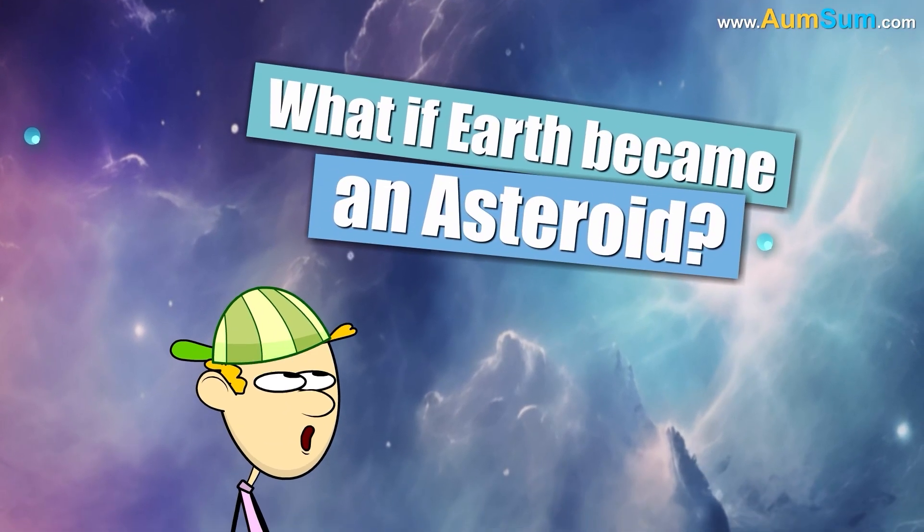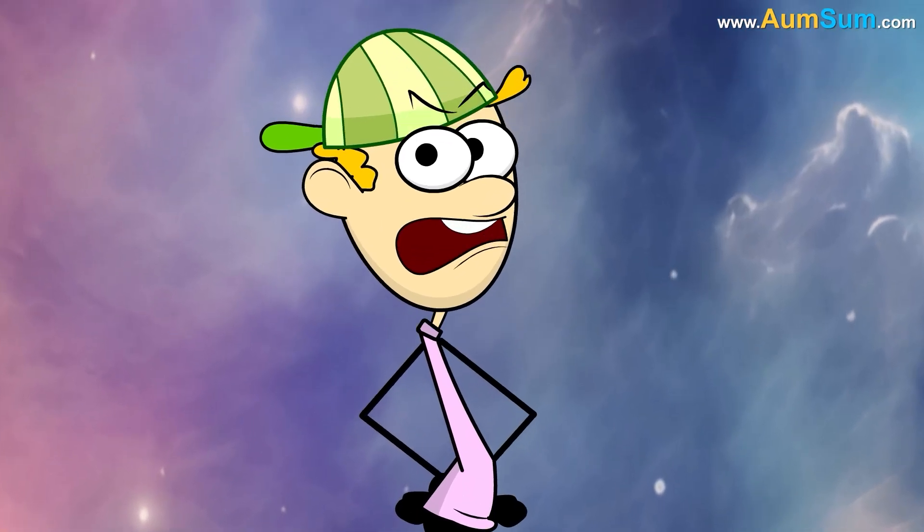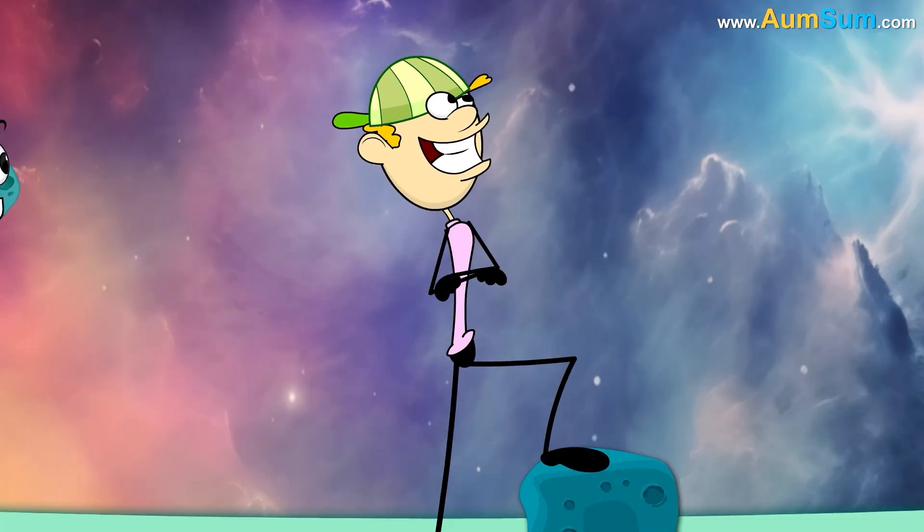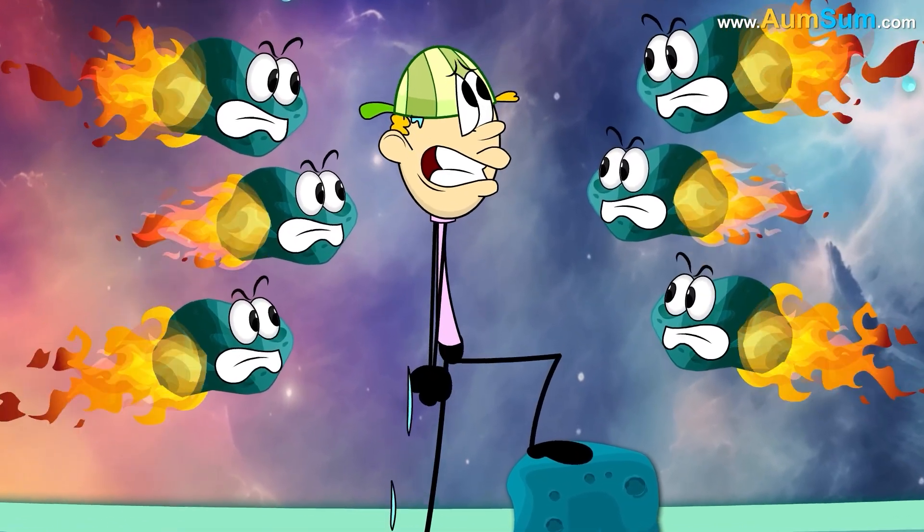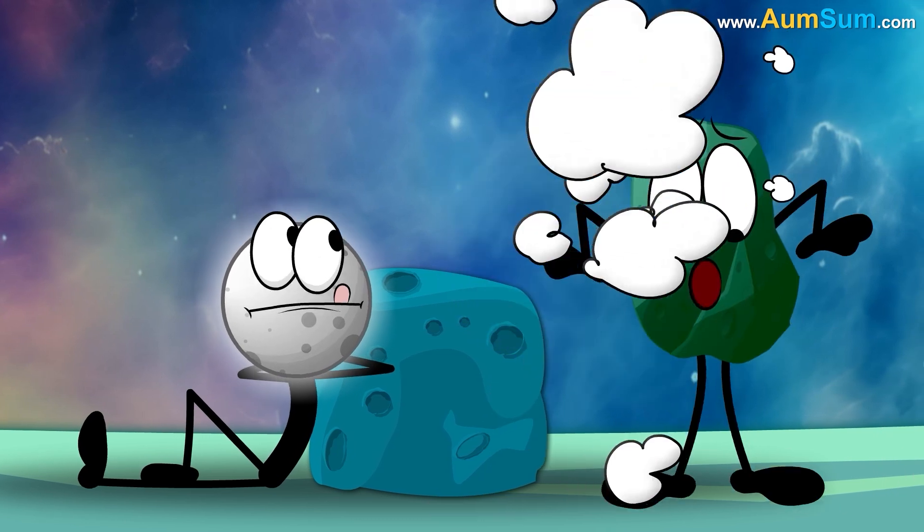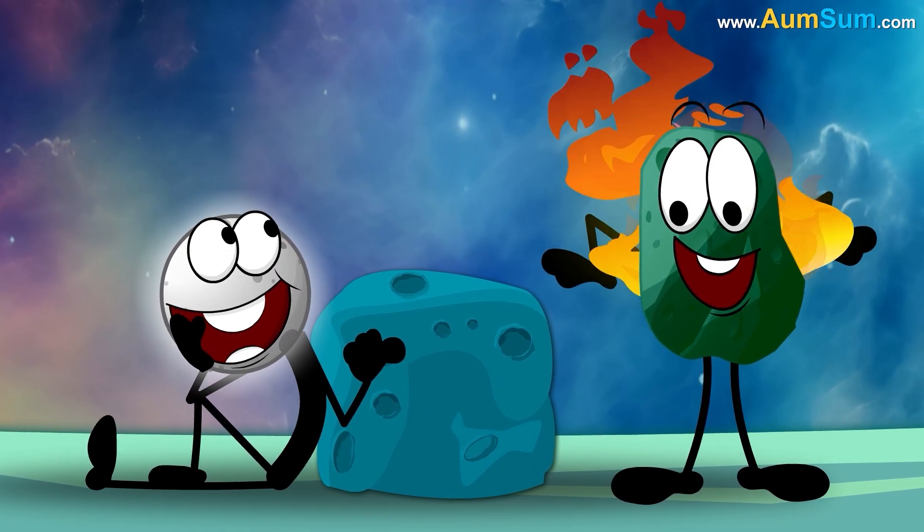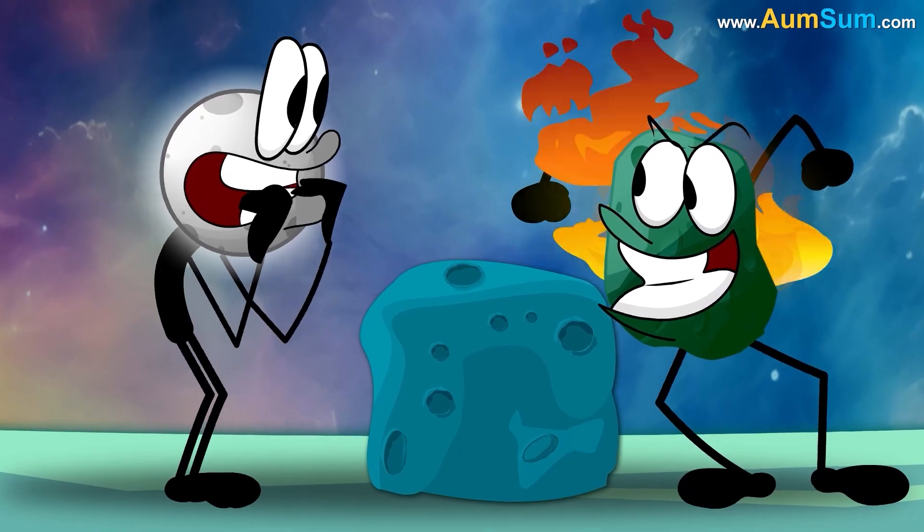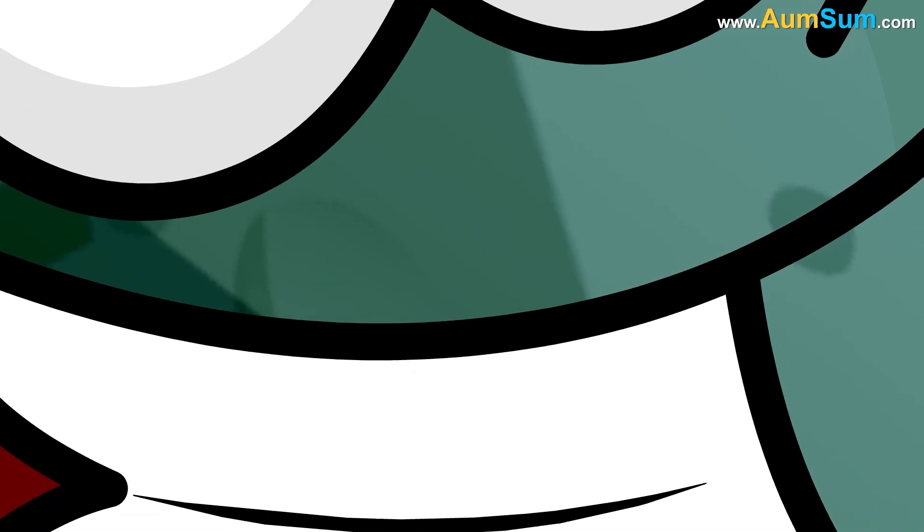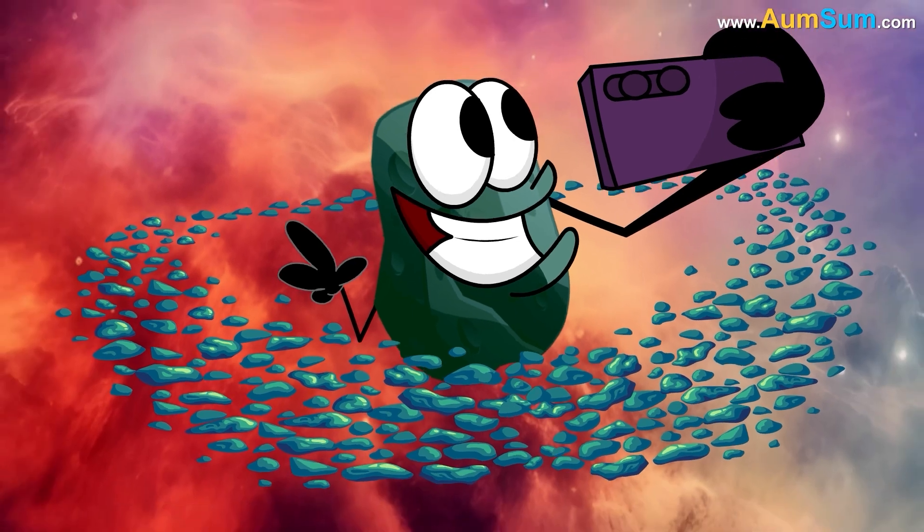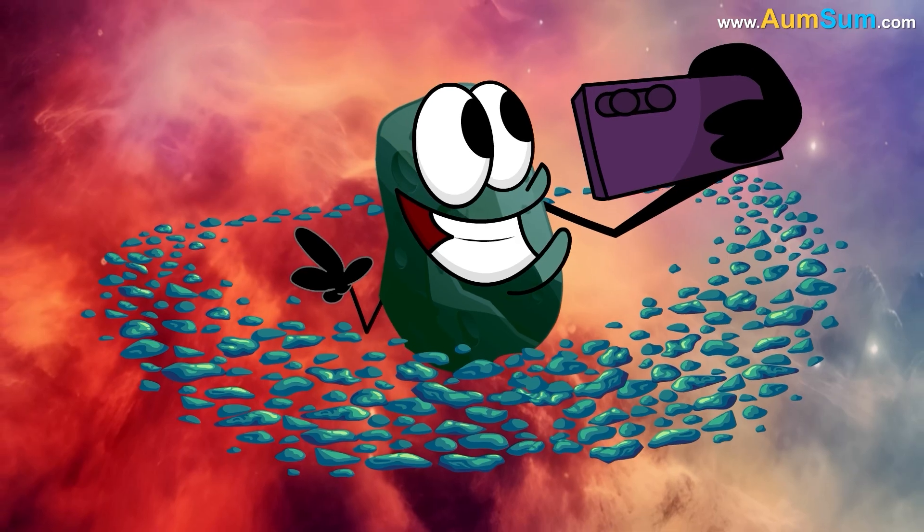What if Earth became an asteroid? Firstly, if Earth became an asteroid, then just like an asteroid, even Earth may now be surrounded by fire. Secondly, if Earth became an asteroid, Earth may shift over to the asteroid belt.